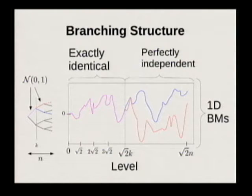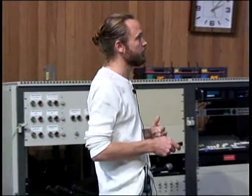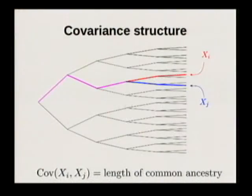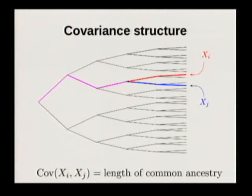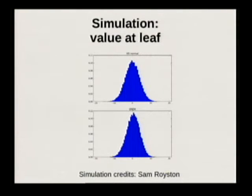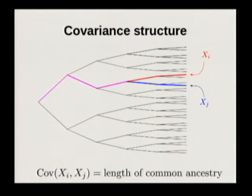So you have a bunch of profile processes — profiles being the processes associated to each leaf — and they branch off at these integer times. The covariance structure of this field of Gaussians is given by exactly the length of the paths that are common ancestors of two vertices. So the question is: how do the extrema of this field behave, do they differ from the extrema of an independent field, and if so, how and why?